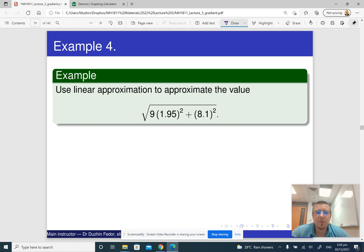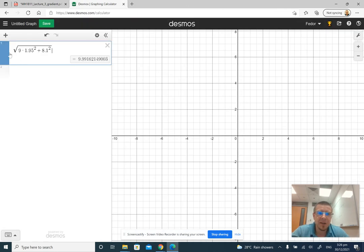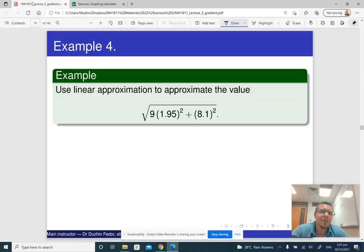We are going to use the linear approximation to approximate the value. By the way, of course, nothing stops us from just finding the exact value or at least with any number of significant figures. Like if I enter this into the Desmos calculator, I will get 9.99 and so on. But the idea is, what happens if we don't really know the exact error, but we can only estimate it? So if we only know that the error is less than one millimeter or something, we are going to begin with this simple example just to develop the intuition.